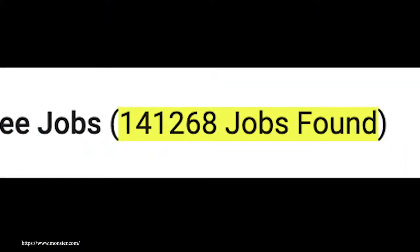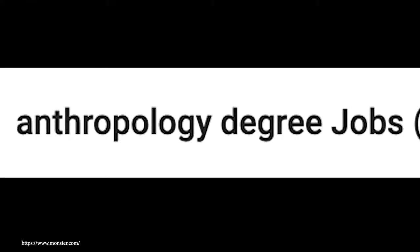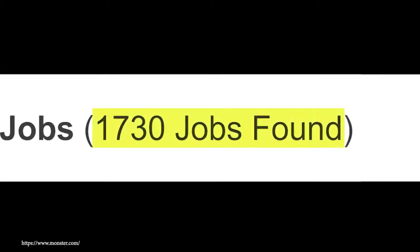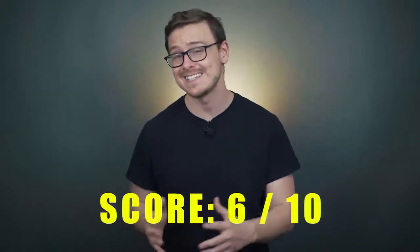One test that I always like to do is to type in the name of the degree into either monster.com or indeed.com. When you type in computer science degree, you have 141,000 jobs that pop up. When you type in anthropology degree, you only have around 829. When you type in food science degree, 1,730 jobs pop up. So it's a little bit better than the bottom feeder, but it's nothing amazing. All things being considered when it comes to demand, I'm going to give this one a 6 out of 10.